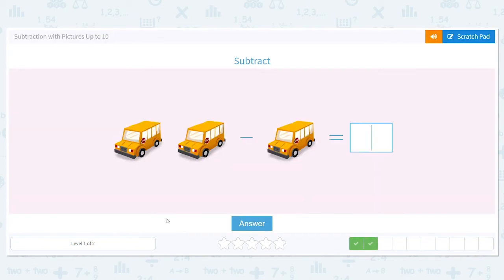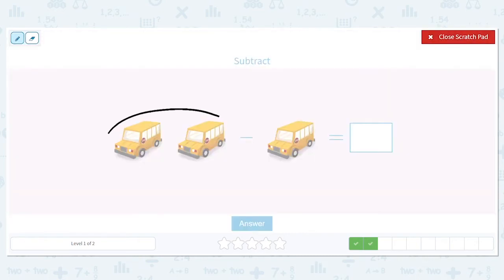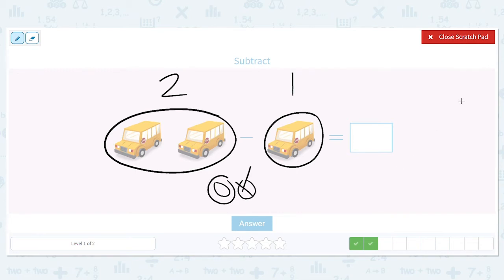Next, I have school buses. Let's subtract away. How many are in this first group? Two. Good job. How many are in the second group? You know it. One. So if I have two school buses but I need to take away one of them. How many are left? Right. Just one.